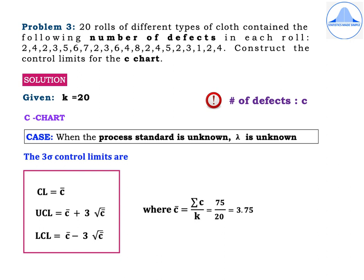Given K = 20. The C chart case is when the process standard is unknown, that is the lambda value is unknown to us, because we have 20 samples with the number of defects mentioned in each sample and the information is not based on the population. The 3-sigma control limits are: CL = C-bar, UCL = C-bar + 3√(C-bar), and LCL = C-bar − 3√(C-bar), where C-bar = ΣC / K. Adding all 20 values gives 75, then dividing by 20 gives C-bar = 3.75.